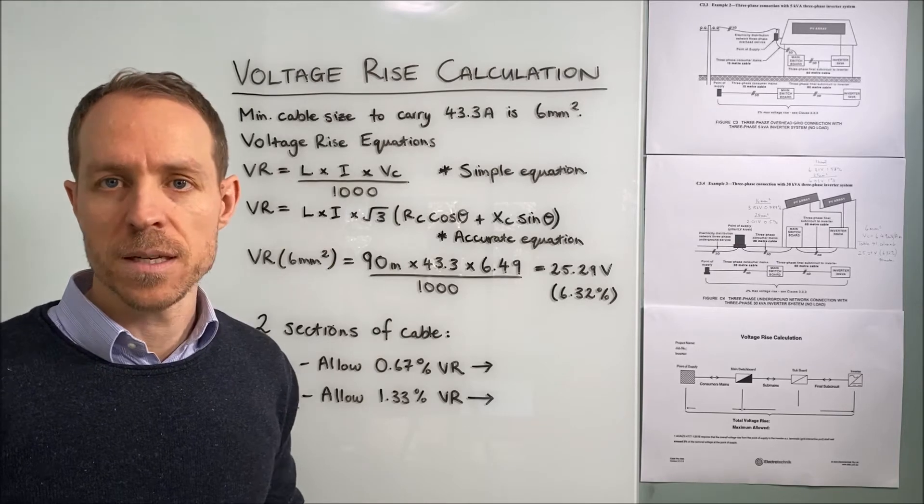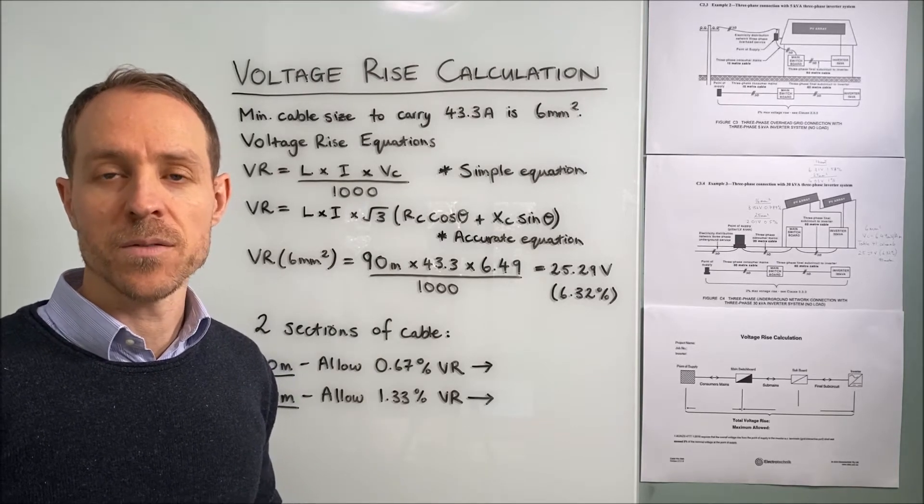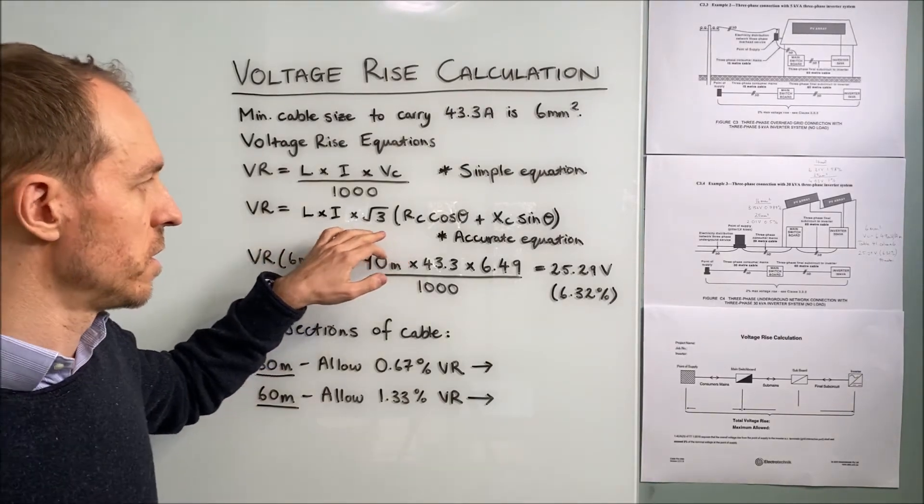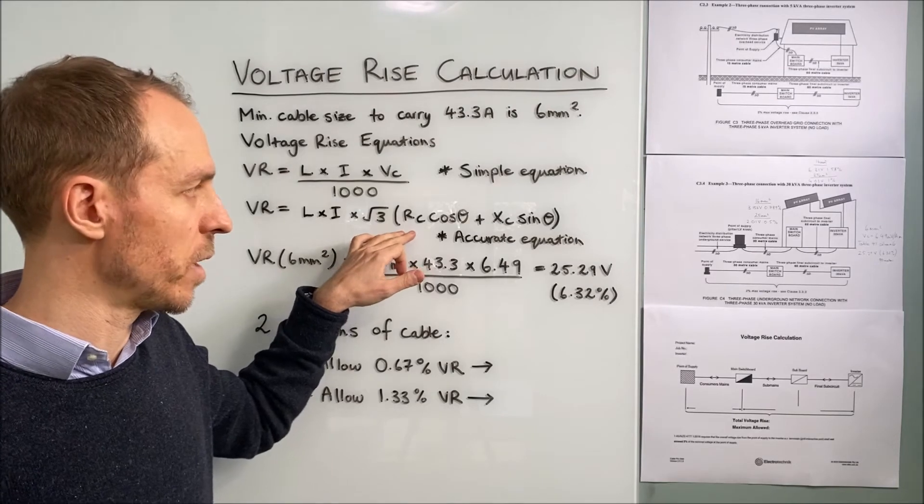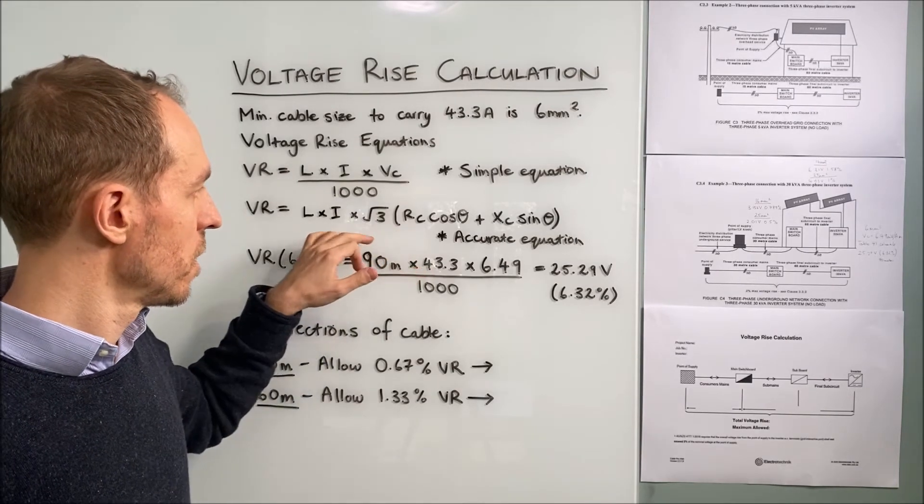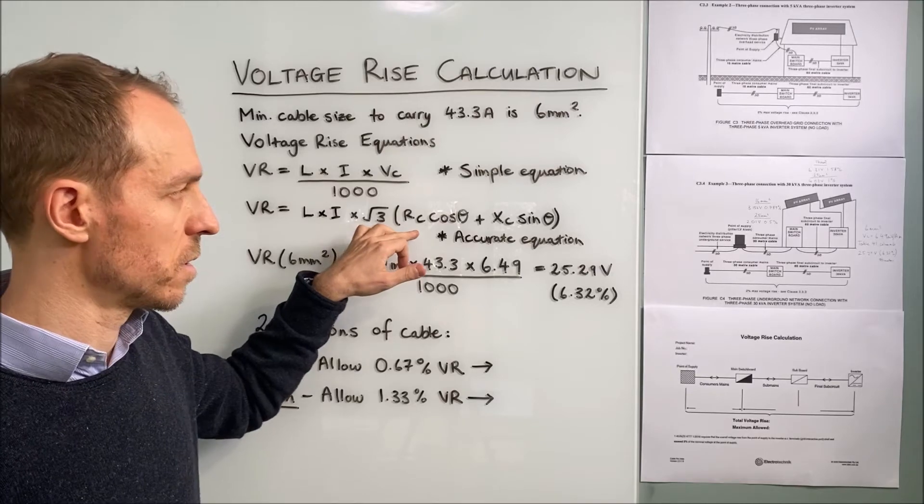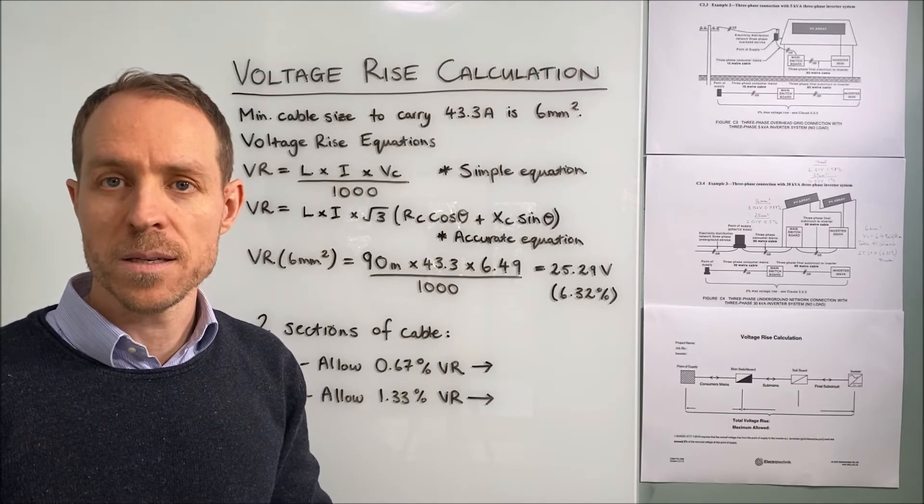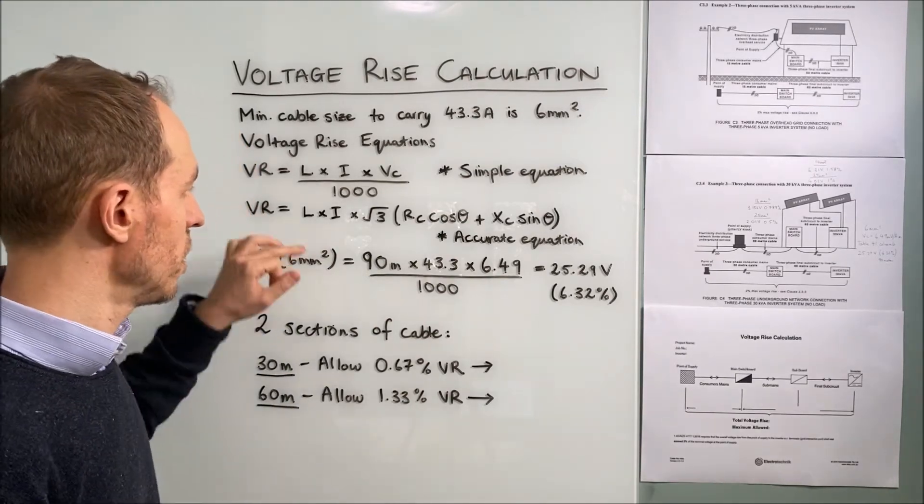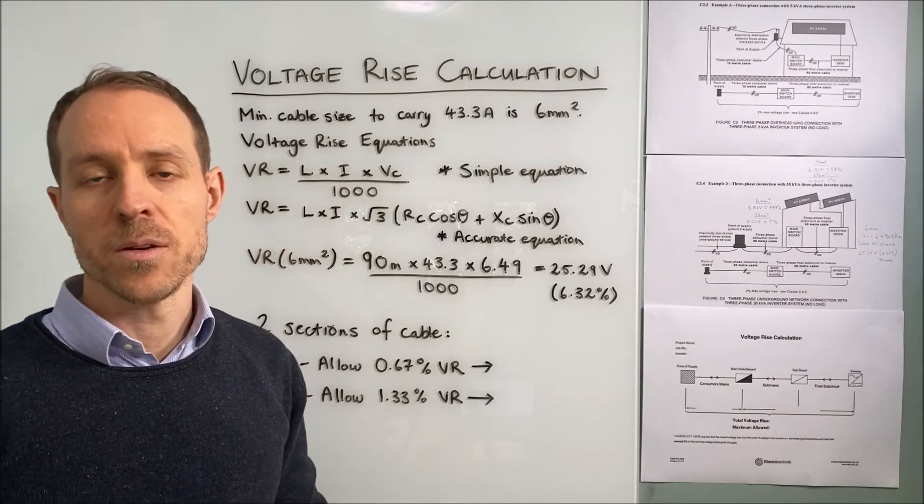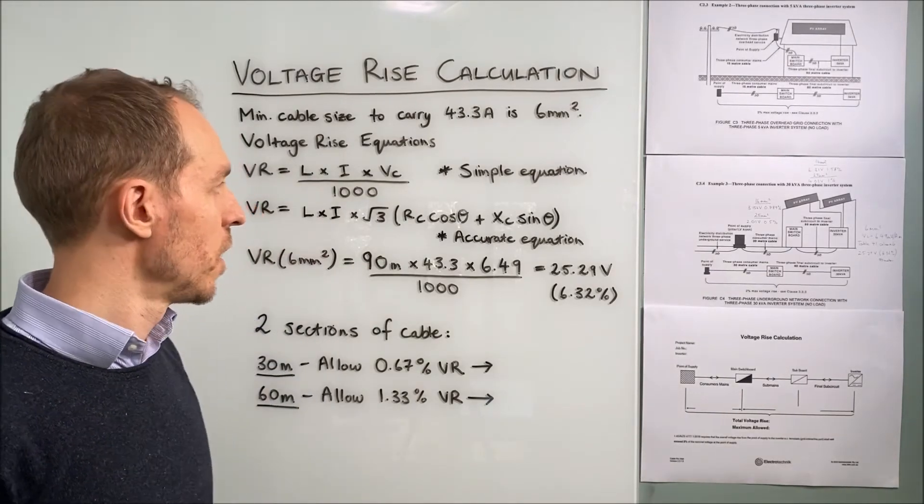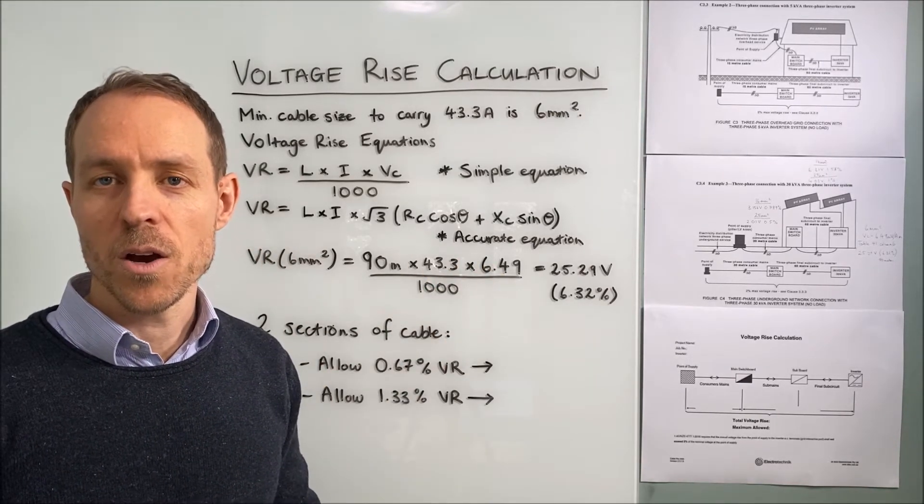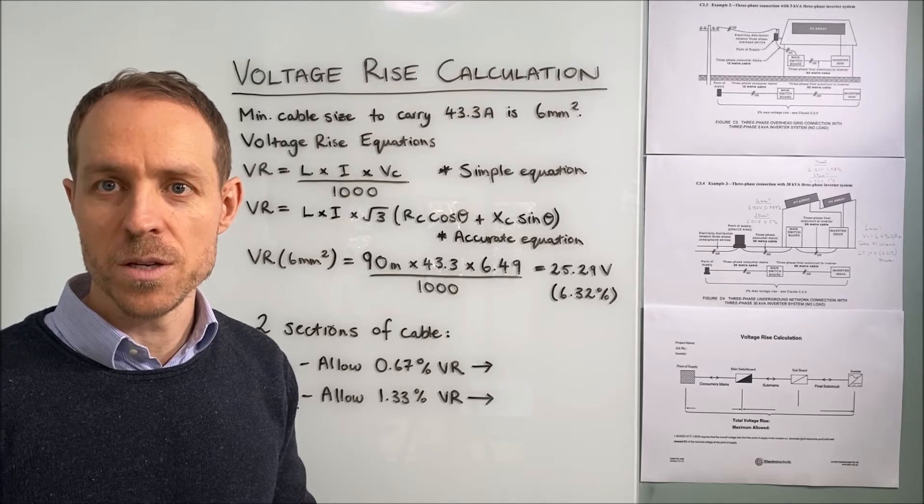The accurate equation which is the equation we're not going to use by hand but it's used by our software. This accurate equation uses cable resistance and reactance and considers power factor as well as cable operating temperature. Using this equation can result in smaller cable sizes. I should also mention you may have noticed that these equations for voltage rise are in fact identical to those for voltage drop.